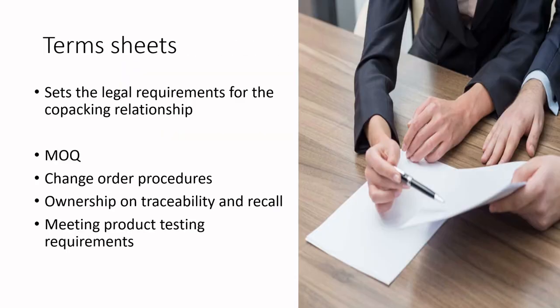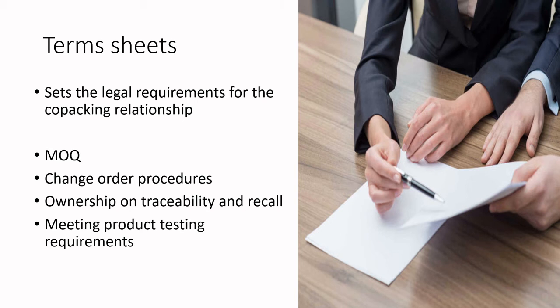As you start to establish what's going on, make sure you have a non-disclosure agreement in place before doing any hardcore negotiation, because you may need to reveal your formulations and processing parameters. As you move forward in the relationship and get closer to setting up an agreement, you'll want to set up a term sheet. Too many small businesses go into co-packing with just a gentleman's agreement — a handshake — without a proper term sheet.